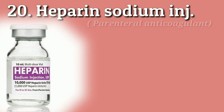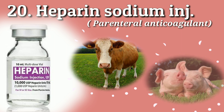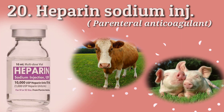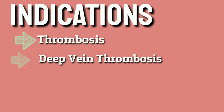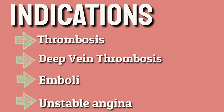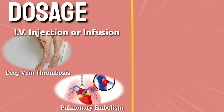Heparin is a parenteral anticoagulant obtained from bovine lungs and porcine intestine. It is used in thrombosis, deep vein thrombosis, emboli, and unstable angina. For treatment of DVT and pulmonary embolism, heparin is injected intravenously.